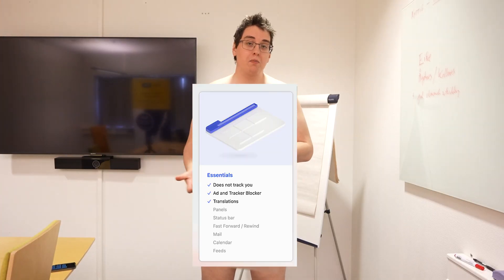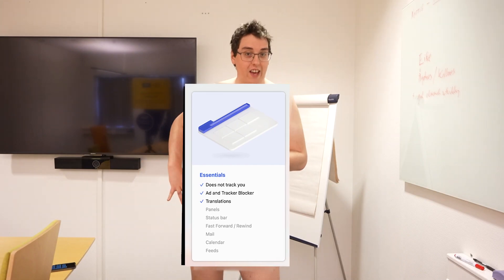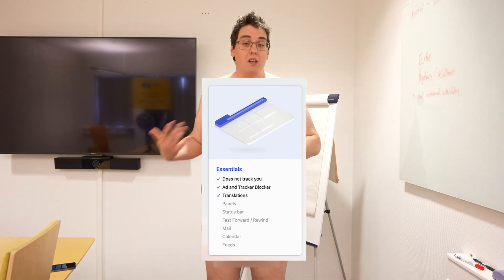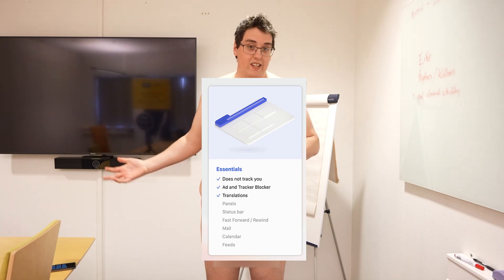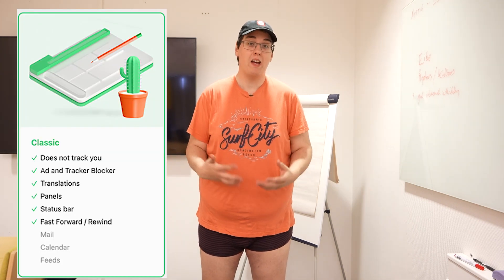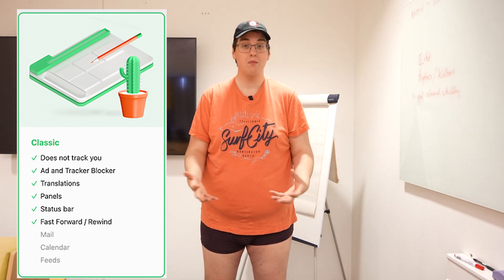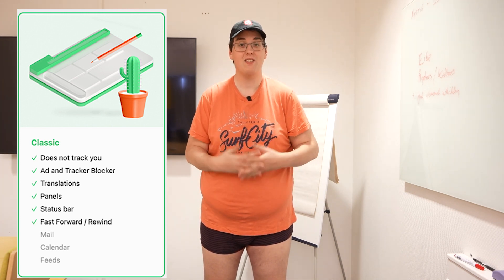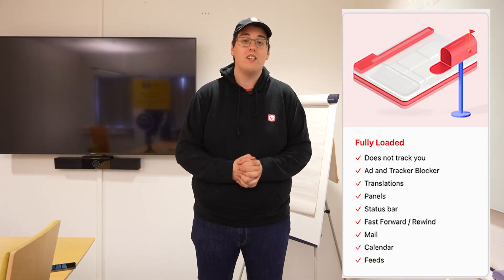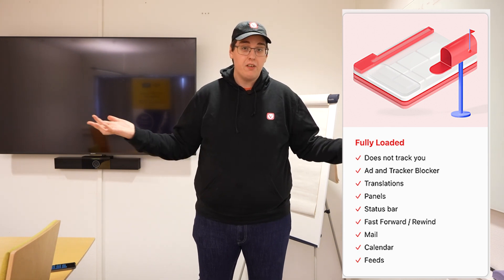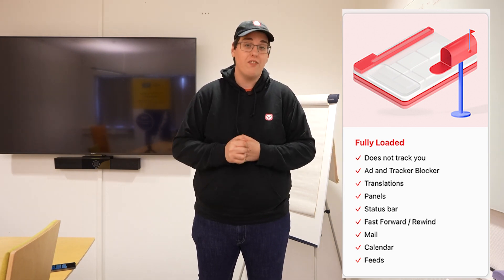Essentials — ideal for people who are looking for a more private browser and don't want to tackle a lot of new features right away. Essential fans also benefit from Vivaldi not tracking how you use your browser, as well as Vivaldi's built-in Ad and Tracker Blocker and Vivaldi Translate. Classic Layout adds panels and the status bar to the mix, giving new users easy access to a bunch of productivity-boosting functionalities right away. Or you can go Fully Loaded, which includes everything from Essentials and Classic, as well as enabling the new beta functions for Vivaldi Mail, Calendar and Feeds.